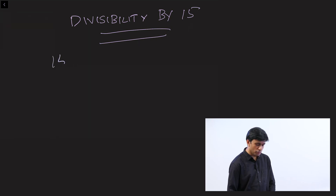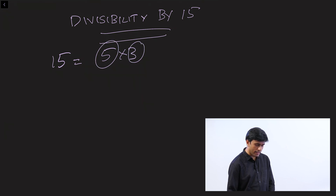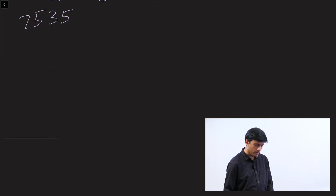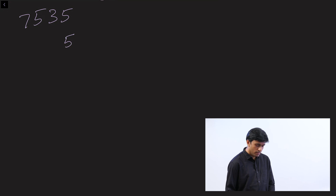Now let's look at divisibility by 15. We know 15 equals 5 times 3, so if a number is divisible by both 5 and 3, we can say that the number is divisible by 15. Let's consider 7,535. Is 7,535 divisible by 15?